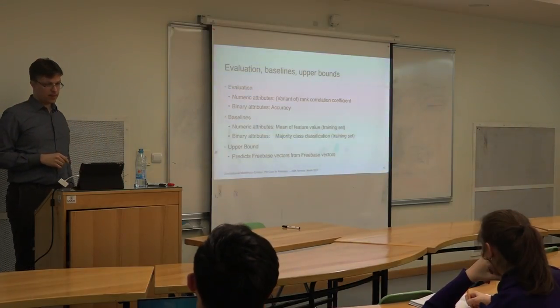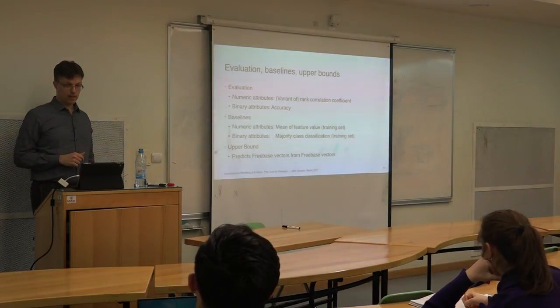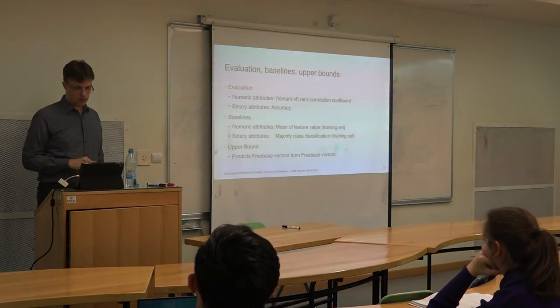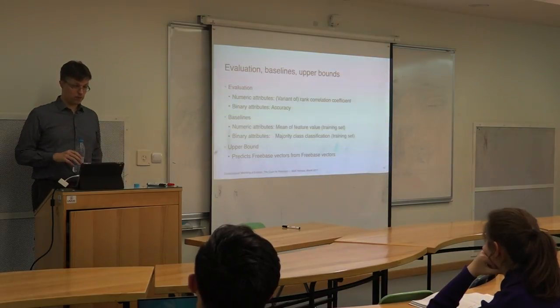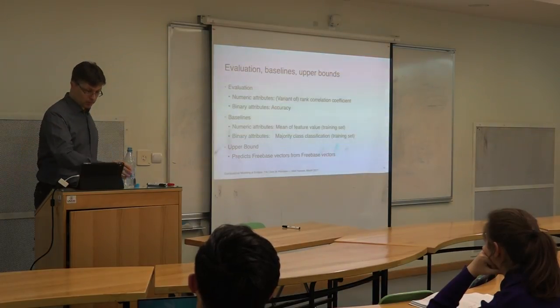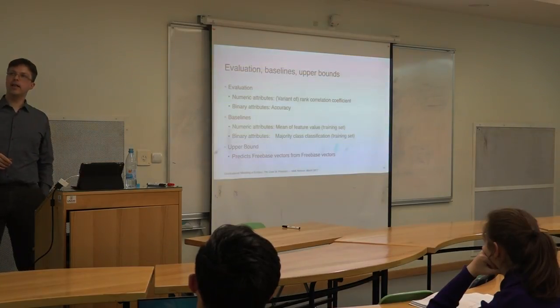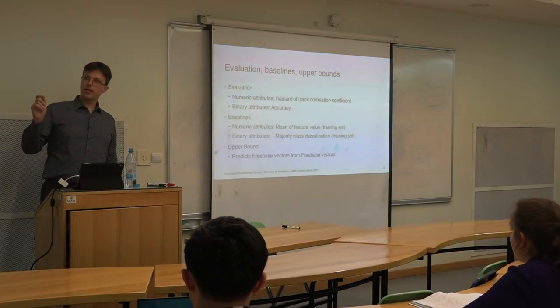And for the binary attributes we just predict accuracy. And then in terms of baselines that you should compare against, for numeric attributes what you can do is—this is a very stupid baseline—there is a mean feature value from the training set. And in terms of binary attributes, you can do a majority class classification.